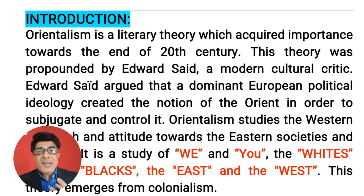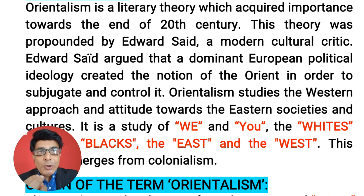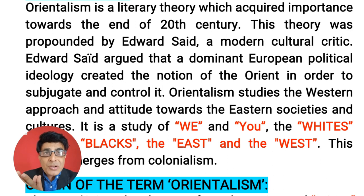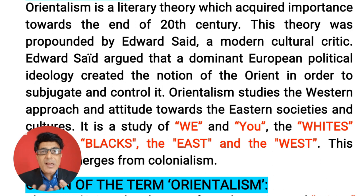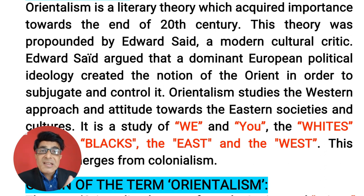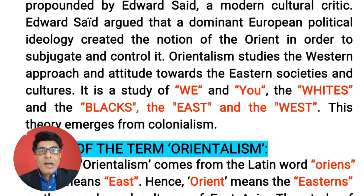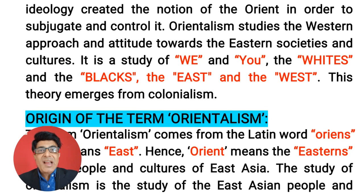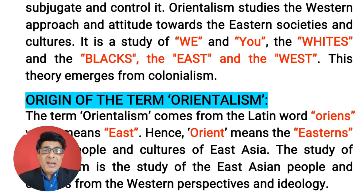So we had this concept of east and west after post-colonialism. Orientalism is actually a theory which studies the western approach, or the European approach towards the eastern societies, eastern people and eastern cultures. It is all about two different classes — it is about we and you. The European people or the western scholars, western writers, they considered themselves as different from the east people. It is all about whites and blacks, east and west. And remember, this theory actually emerged out of post-colonialism.